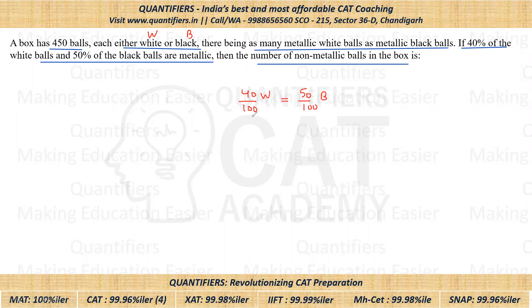So if we equate them, we can find the ratio of white balls to black balls. The 100s and 10s cancel out, and the ratio of white balls to black balls comes out to be 5 is to 4.